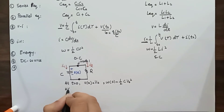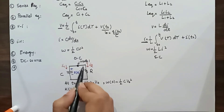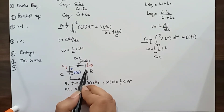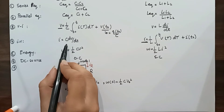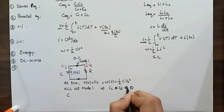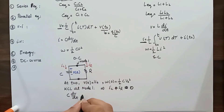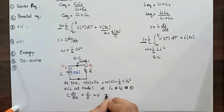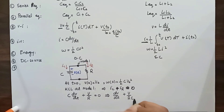Let's call the top node Node 1 and apply KCL at this node. Since both currents are leaving the node, we write: iC + iR = 0. The current through the capacitor is C × dv/dt, and the current through the resistor is v/R. So: C × dv/dt + v/R = 0. Dividing by C gives: dv/dt + v/(RC) = 0.